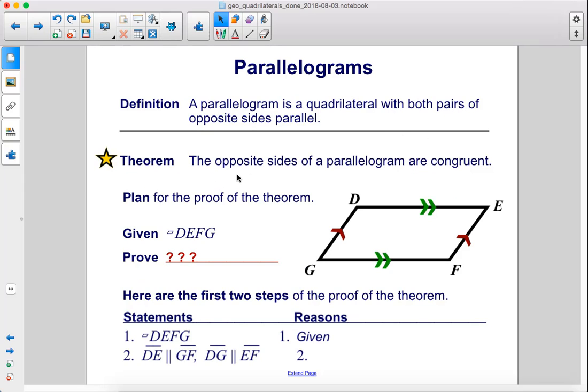Theorem: The opposite sides of a parallelogram are congruent. Let's plan for the proof of the theorem. So we're given the fact that this is a parallelogram. What do we want to prove? Here are the first two steps of the proof of the theorem.